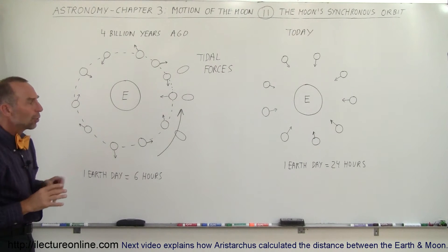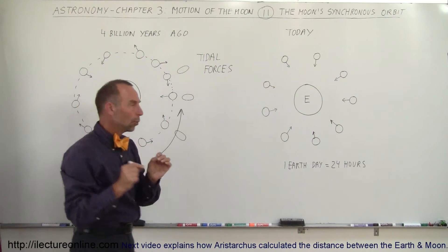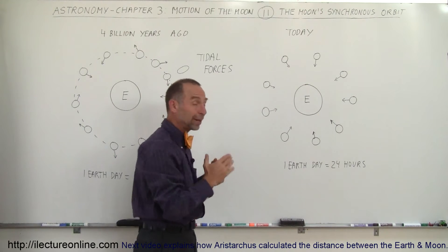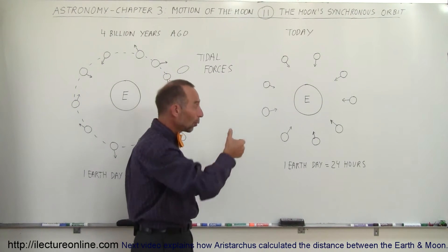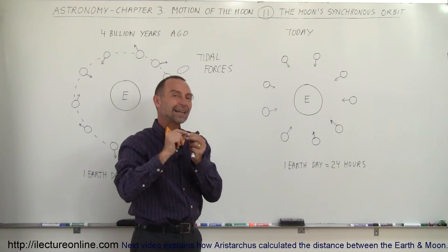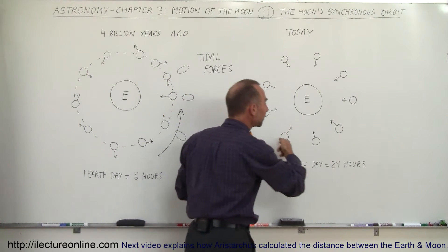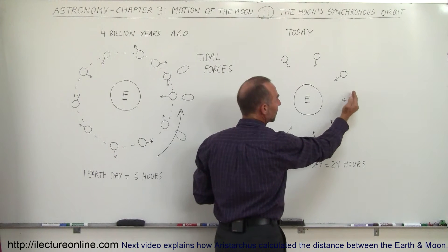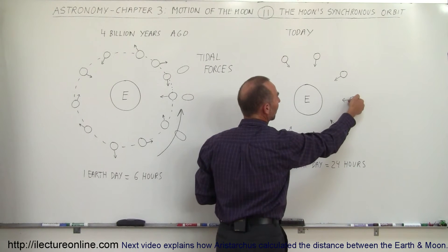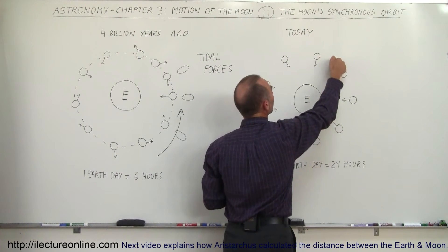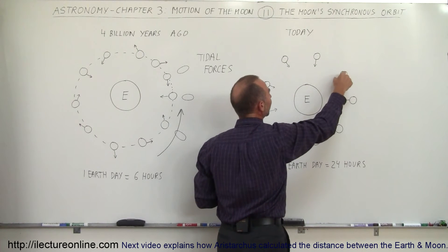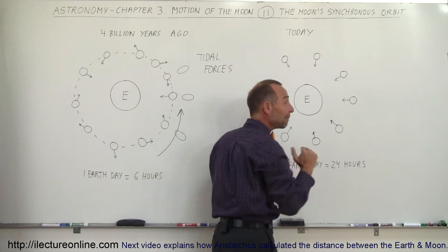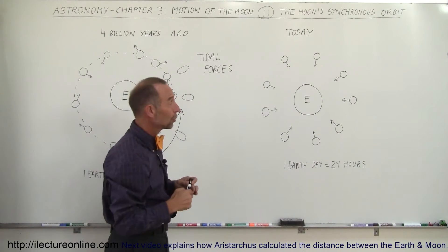Today it doesn't do that anymore. Today the rotational rate of the Moon is exactly in sync — that's why they call it synchronous orbit. The rotation of the Moon is exactly in sync with the time it takes the Moon to make one trip around the Earth. That same portion of the Moon is always facing the Earth, and as the Moon slowly revolves, the same face always points toward the Earth, so we can never see the back side of the Moon, at least not from the Earth.